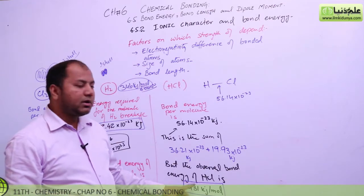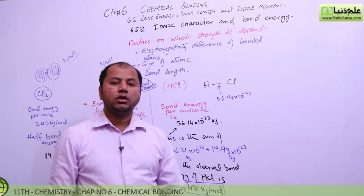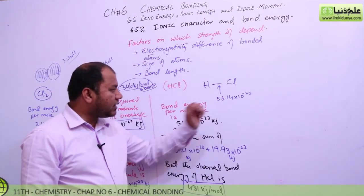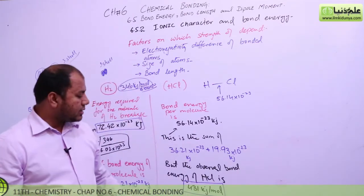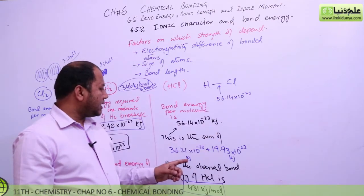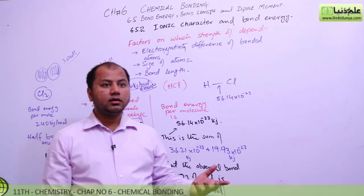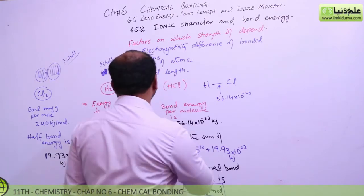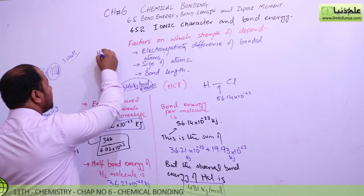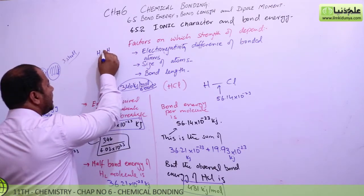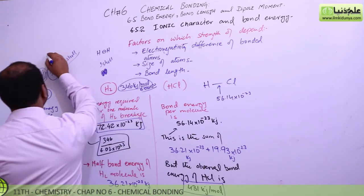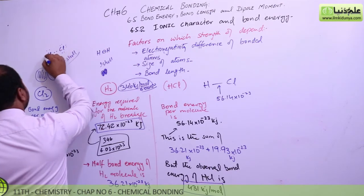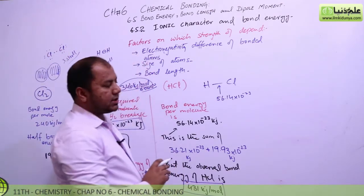When we experimentally observe it, the energy is 431 kJ per mole — that is what HCl actually releases. If we divide this by Avogadro's number we get the per-molecule energy. There is something very different about the HCl molecule. The difference is: in both H₂ and Cl₂, the bond pair is equally shared. In hydrogen the bond pair is equally shared, and in chlorine the bond pair is also equally shared.